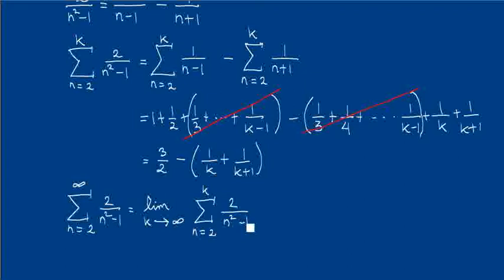But we have computed that this partial sum equals 3 over 2 minus 1 over k minus 1 over k plus 1. So we end up computing the limit of 3 over 2 minus 1 over k minus 1 over k plus 1. When k goes to infinity, this term goes to 0 and also this term goes to 0, so the final answer is 3 over 2.